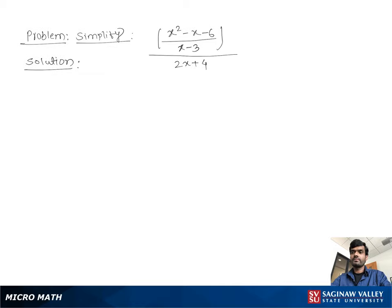Simplify (x² - x - 6)/(x - 3) divided by (2x + 4). For the second step, we keep the numerator part as it is, so you can write (x² - x - 6)/(x - 3).